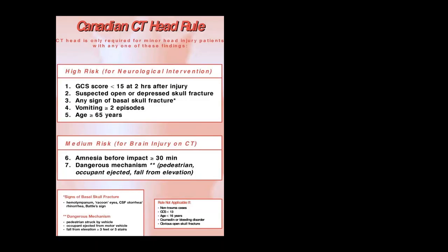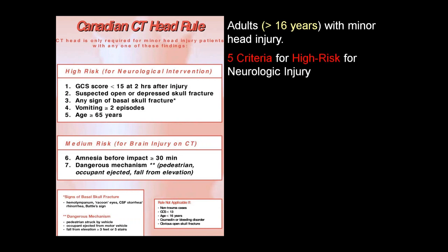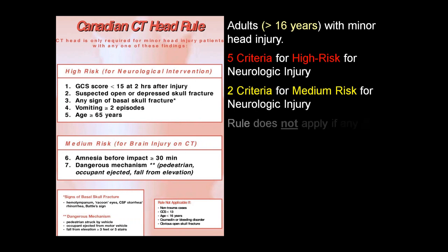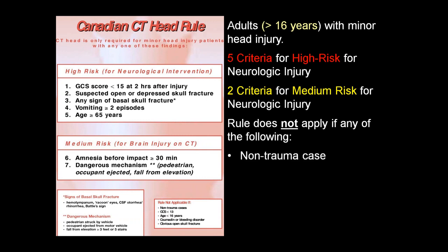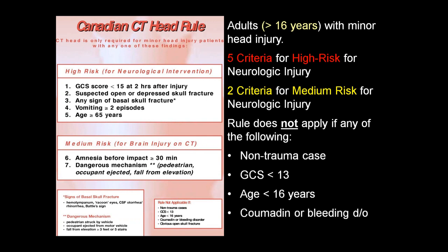The Canadian CT head rule applies to adults greater than 16 years of age with minor head injury. There are five criteria for high-risk neurologic injury and two for medium-risk. The rule does not apply if: it's not a trauma case, if GCS is less than 13, if the patient is under 16 years of age, if they have Coumadin or a bleeding disorder including newer anticoagulants or Plavix, or if they have an obvious open skull fracture.